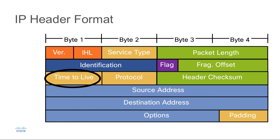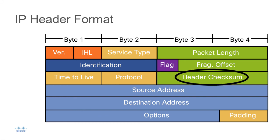This is a field we can control in some implementations. The next field is the protocol field. For example, protocol number 1 indicates that this is an ICMP packet — we use ICMP for testing connectivity and for relaying errors. This protocol field is often set to a value of 6, indicating that the upper layer protocol is TCP, or protocol 17, which indicates that the upper layer protocol is UDP.